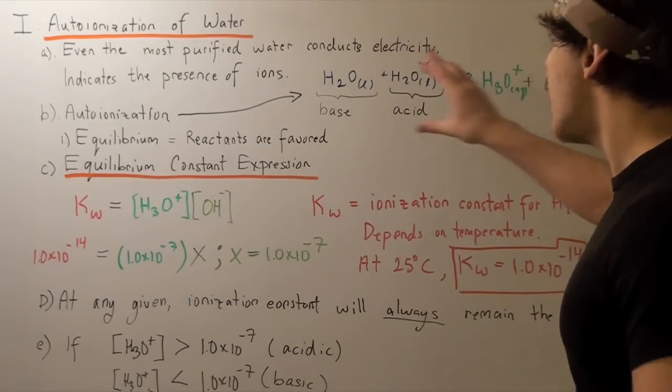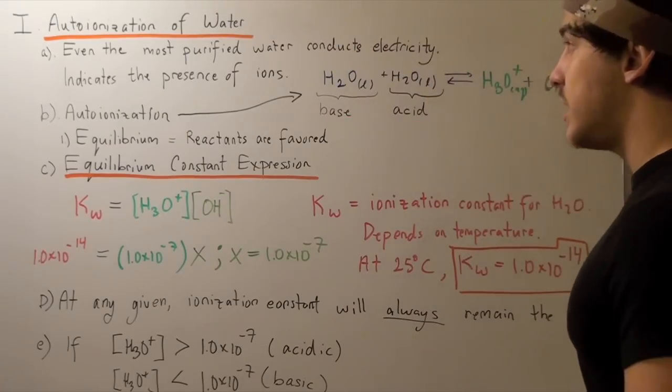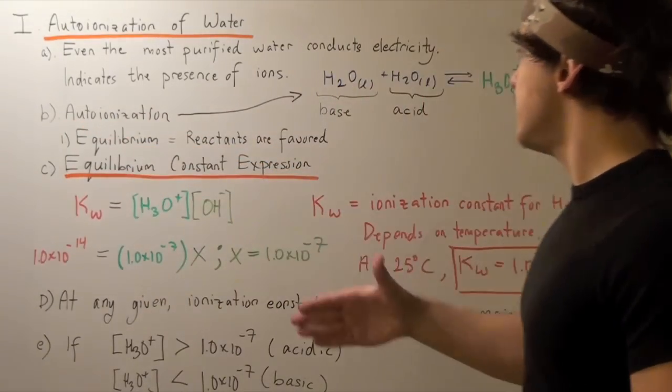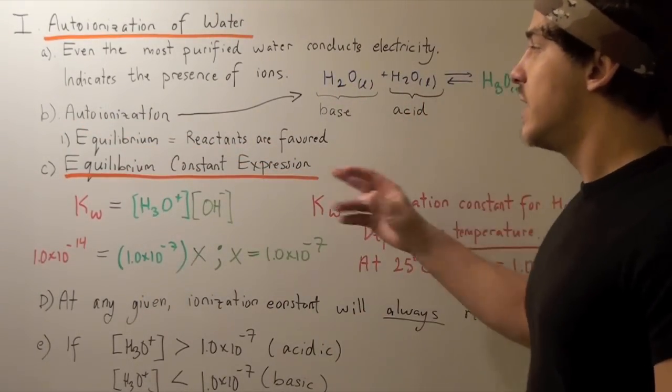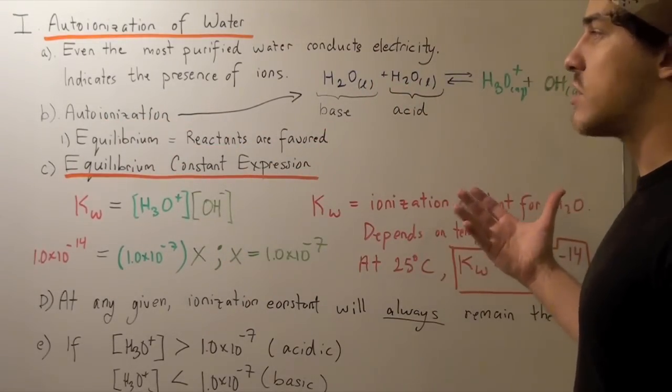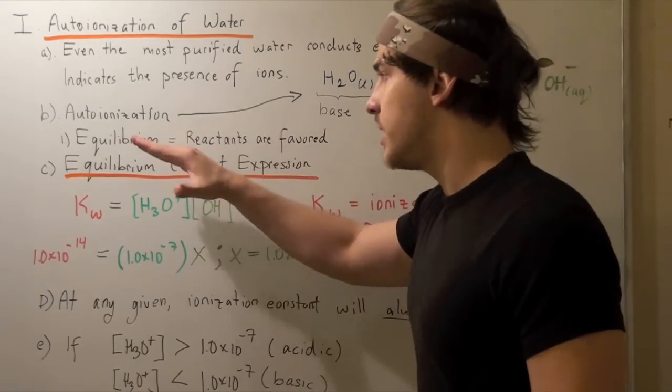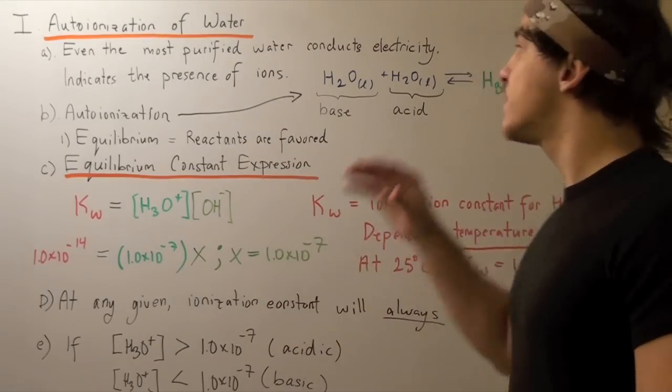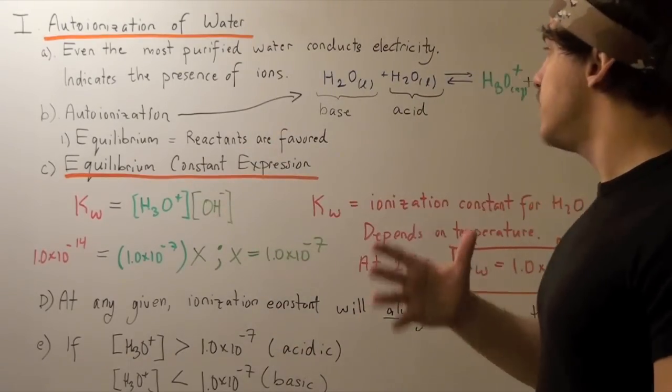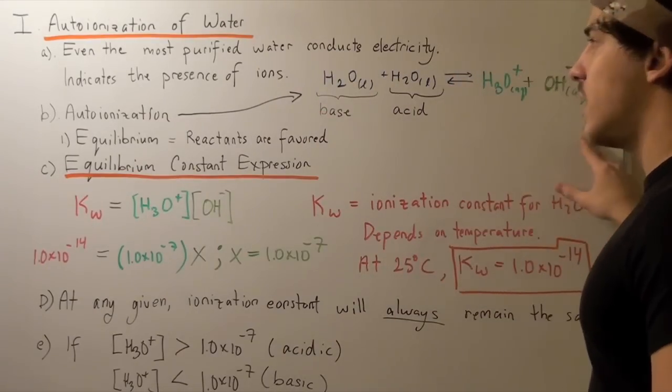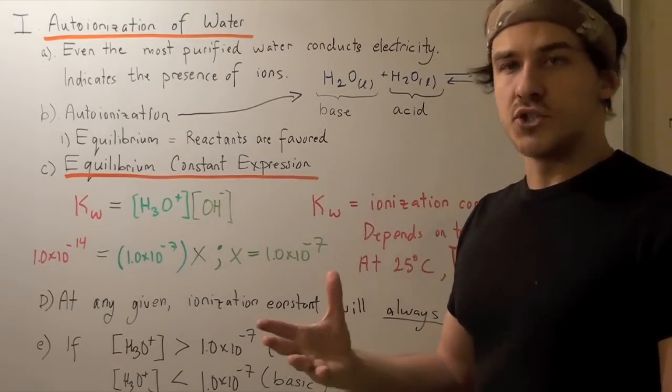This process of association is called auto-ionization, where auto basically means that two water molecules interact, and ionization means the dissociation of the two water molecules. At equilibrium, reactants are favored, and that means equilibrium lies far to the left. So there will be many more water molecules than ions at any given temperature.